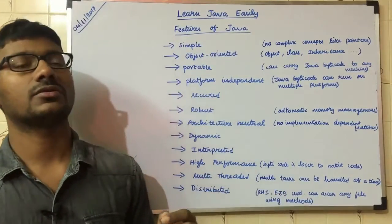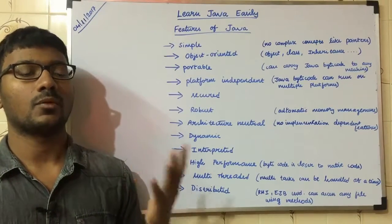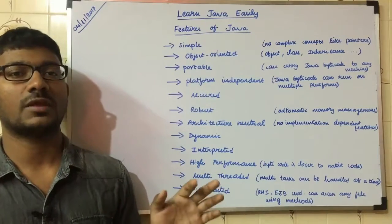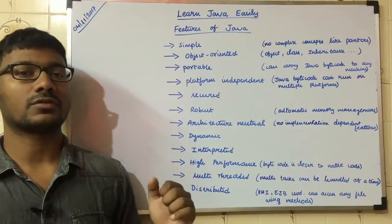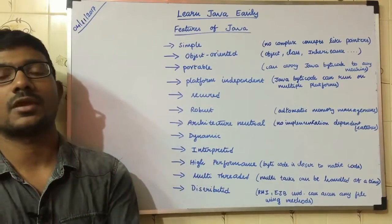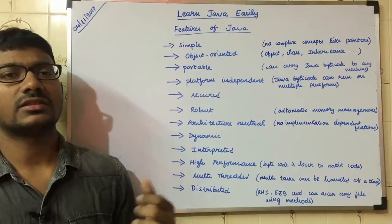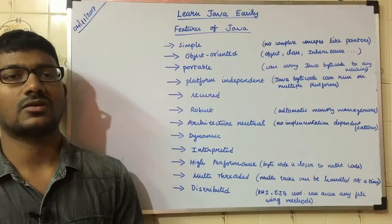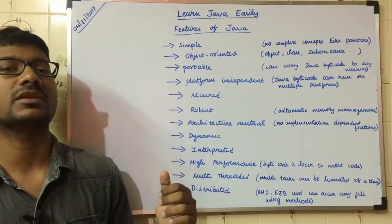This is multi-threaded. Multi-threaded means multiple processes can run at the same time. For example, you can play a game on mobile, type in a word processor, and chat simultaneously. In MS Office, you can type and run a spell check at the same time. In one program, multiple tasks can be handled in Java.